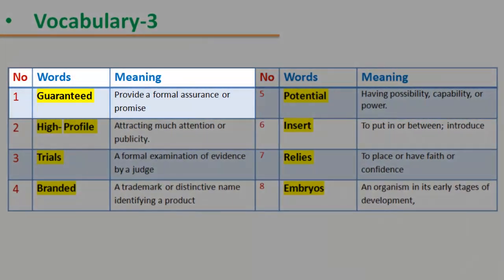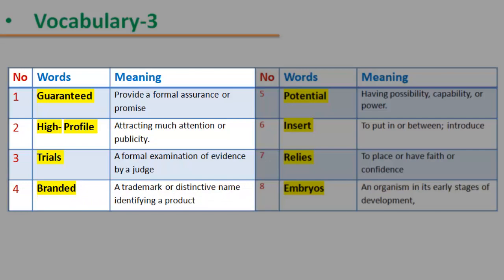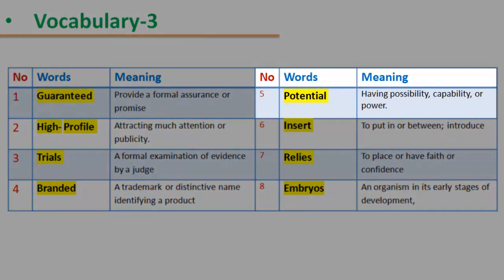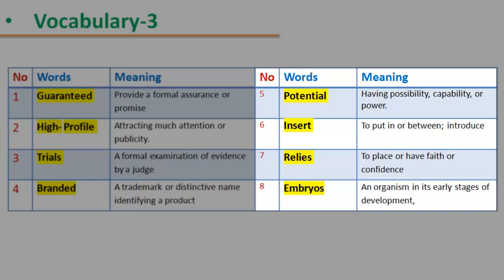Vocabulary 3. Number 1 — Guaranteed: provide a formal assurance or promise. Number 2 — High-profile: attracting much attention or publicity. Number 3 — Trials: a formal examination of evidence by a judge. Number 4 — Branded: a trademark or distinctive name identifying a product. Number 5 — Potential: having possibility, capability, or power. Number 6 — Insert: to put in or between; introduce. Number 7 — Relies: to place or have faith or confidence. Number 8 — Embryos: an organism in its early stages of development.